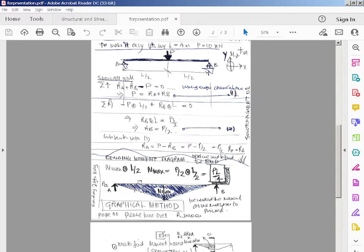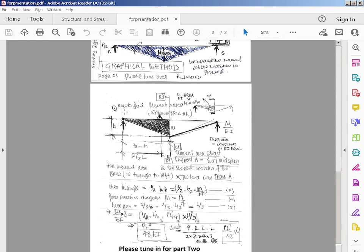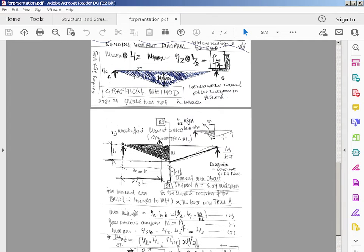Now we've got to take the moments of the moment. This is the M diagram. Because EI is constant, the M over EI diagram is going to be the same, just reduced in vertical scale. We just need to find the area of the moment diagram on the left hand side of the center.